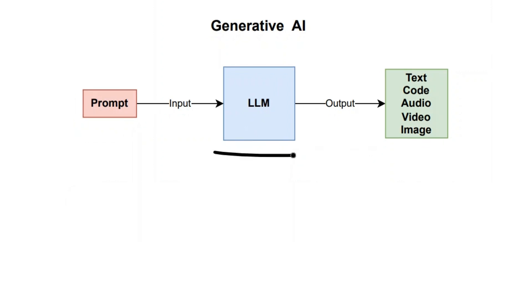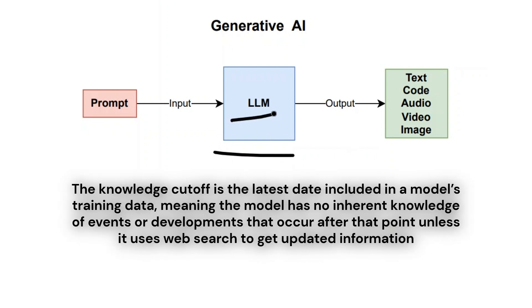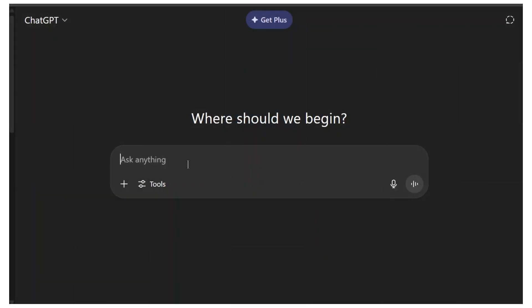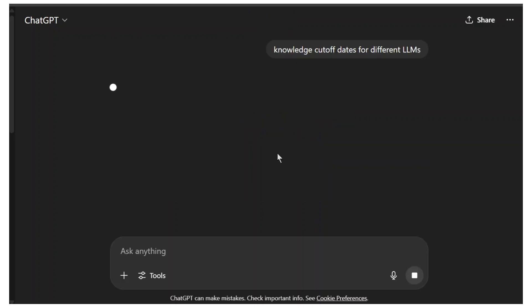There are many LLMs available in the market — some of them are ChatGPT, Gemini, Claude, and many more. Each LLM has its own knowledge cutoff date, which means the LLM is trained only up to that date. I'll ask ChatGPT what the knowledge cutoff date is for different LLMs.